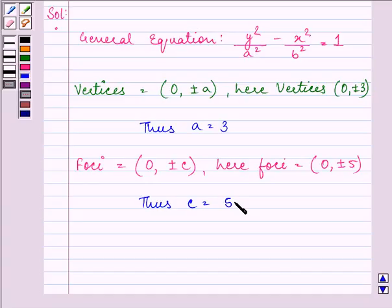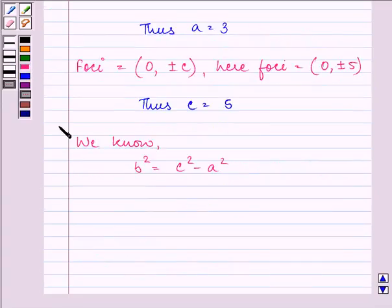Now, with the values of a and c, we can find the value of b. We know that b² = c² - a². Let us substitute the values: b² = 25 - 9. So we have b² = 16.